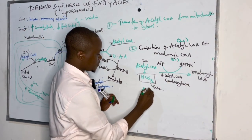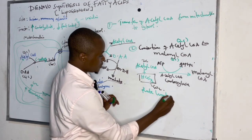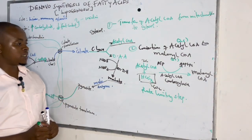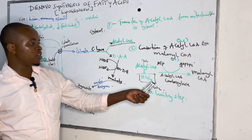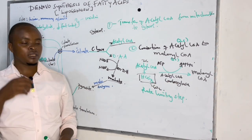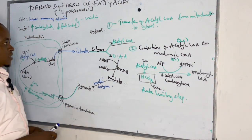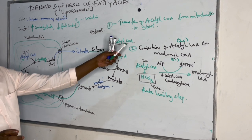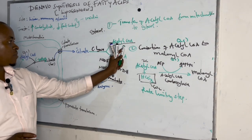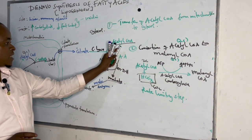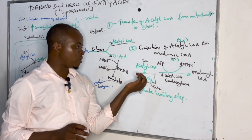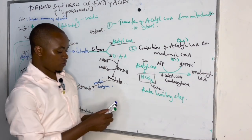This is known as the rate-limiting step. If we want to regulate this pathway, we can regulate it at this step — either by increasing the synthesis of acetyl-CoA carboxylase or by decreasing it. So we have seen two steps: first, transfer of acetyl-CoA from mitochondria to cytosol via citrate; second, conversion of acetyl-CoA to malonyl-CoA (a 3-carbon compound) by addition of bicarbonate. Malonyl-CoA is the precursor for de novo synthesis of fatty acids.